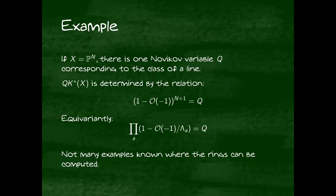Okay, what does this look like in an example? If X is P^n, there is one Novikov variable q and powers of it. q corresponds to the class of a line. And so our relation before (1 - O(-1))^{n+1} = 0 ends up becoming (1 - O(-1))^{n+1} = q. This is in quantum cohomology. There's kind of a nice enumerative explanation for this here. It's not quite so obvious, but this ends up being what you get. Equivariantly, the modification is the same as for the non-quantum case. You insert your weights on each O(-1).